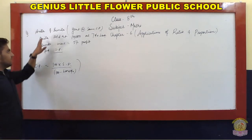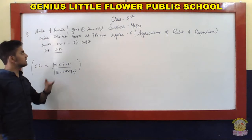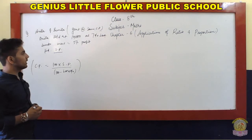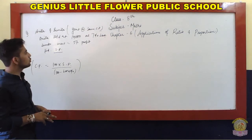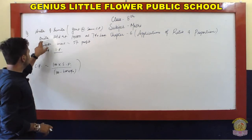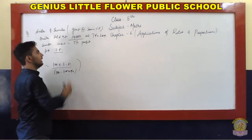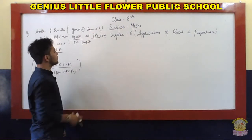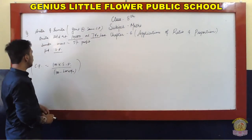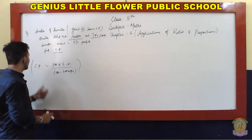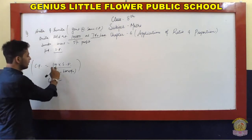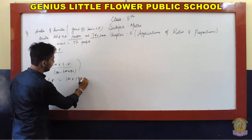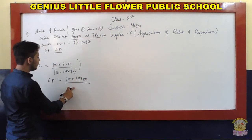Next question: Anita and Sunita are two persons who bought a goat at the same cost price. Anita sold her goat at 14,880 rupees at a 7% loss. So now we have to calculate the cost price. The formula is: cost price equals 100 multiplied by the selling price, divided by the relevant percentage.